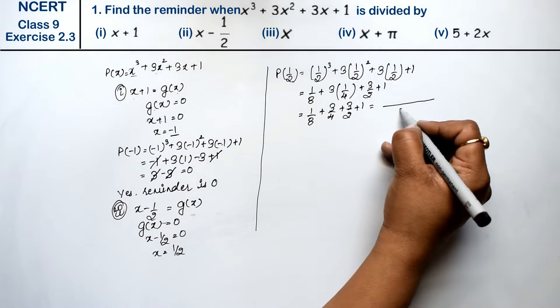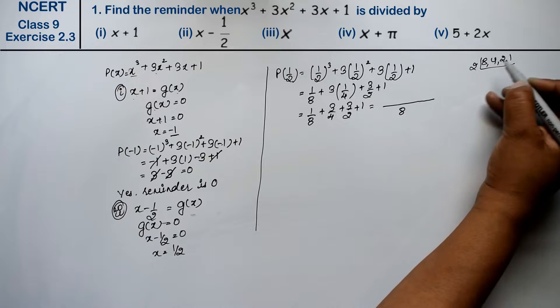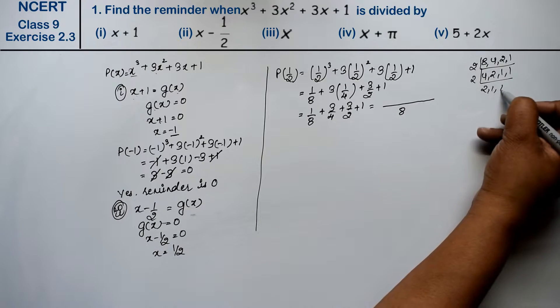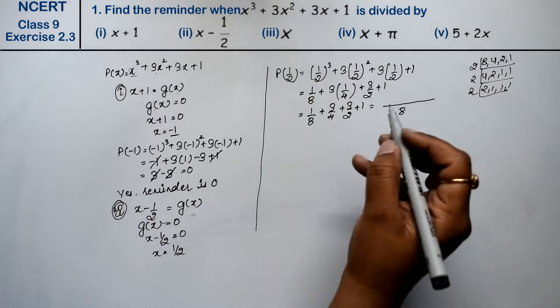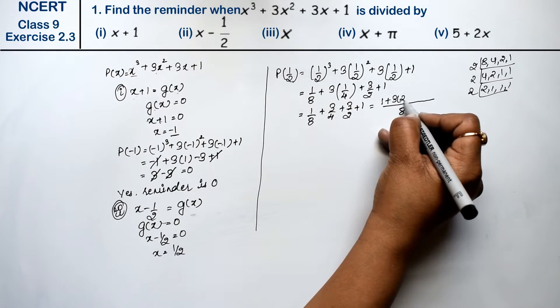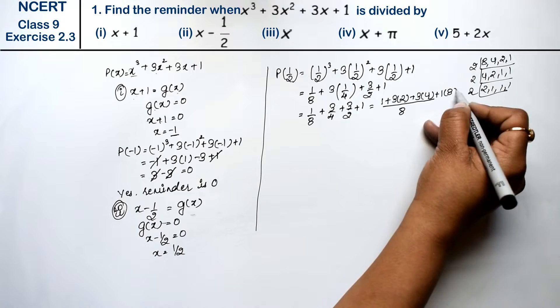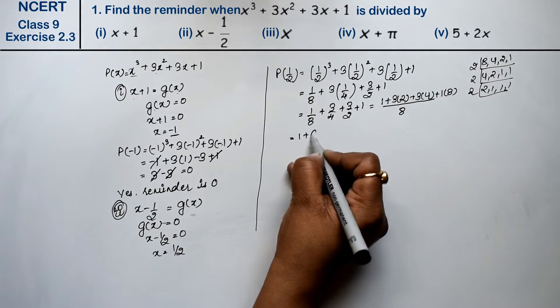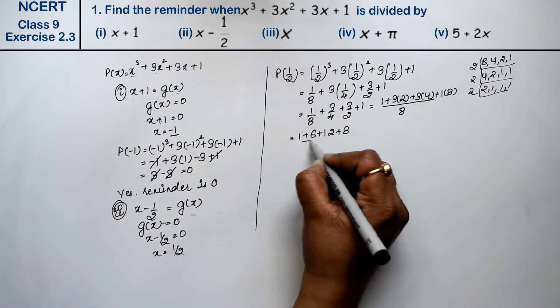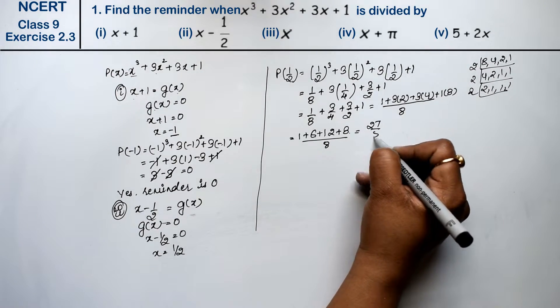LCM of 8, 4, 2, 1 is 8. Now 1 plus 3 into 4, 2 eights, plus 3 into 2 fours are 8, plus 1 into 8. This gives 1 plus 3 twos are 6, plus 3 fours are 12, plus 1 eight is 8, upon 8. This equals 20, 26, 27 upon 8 is the answer.